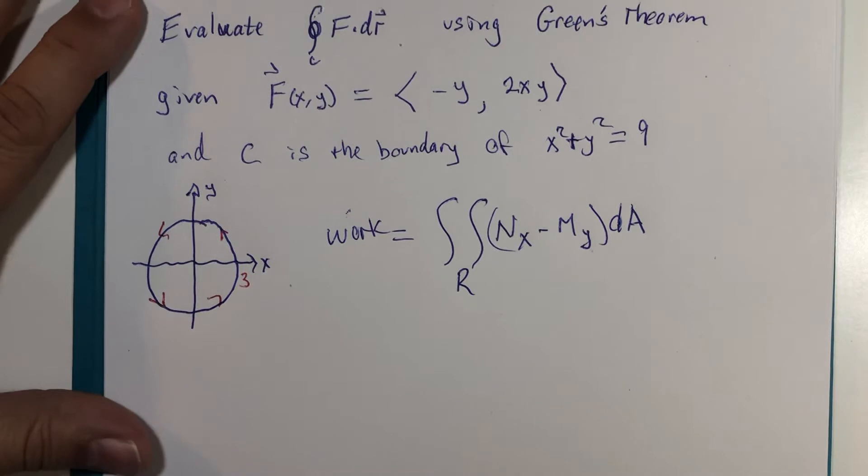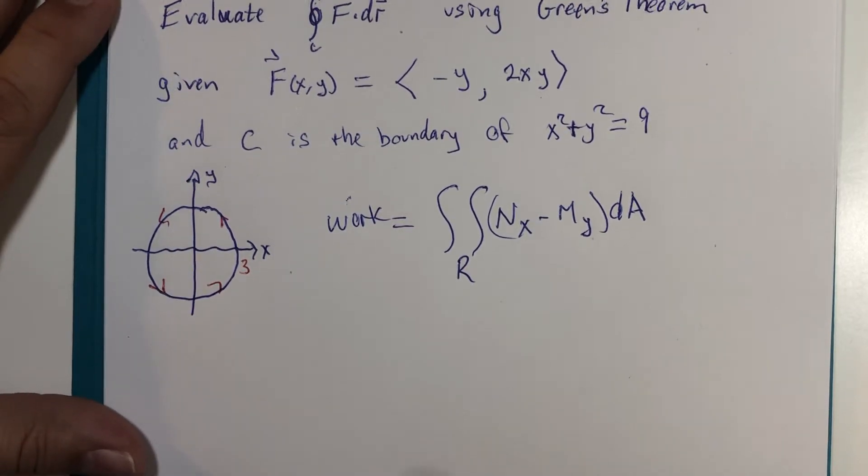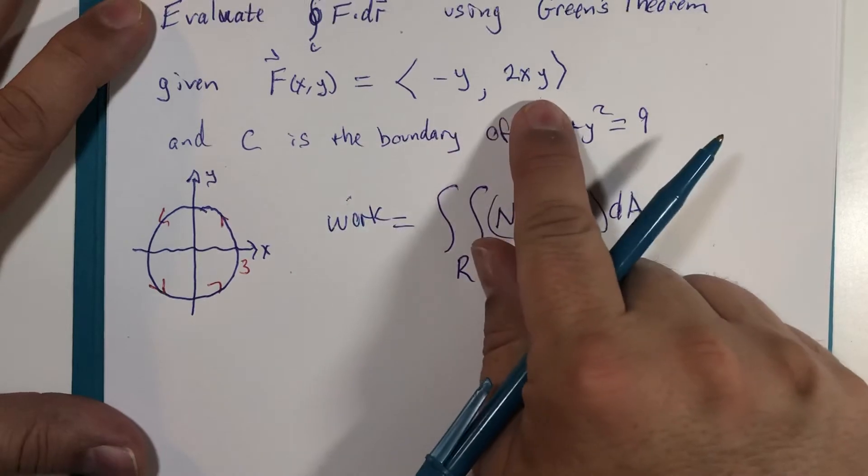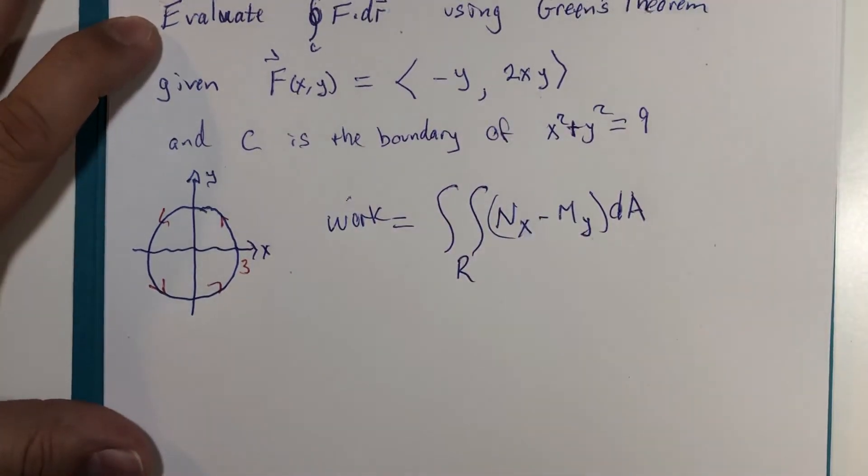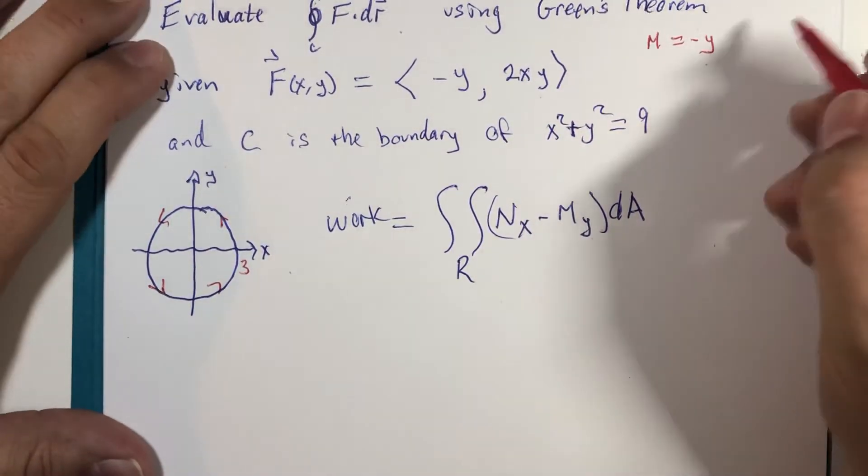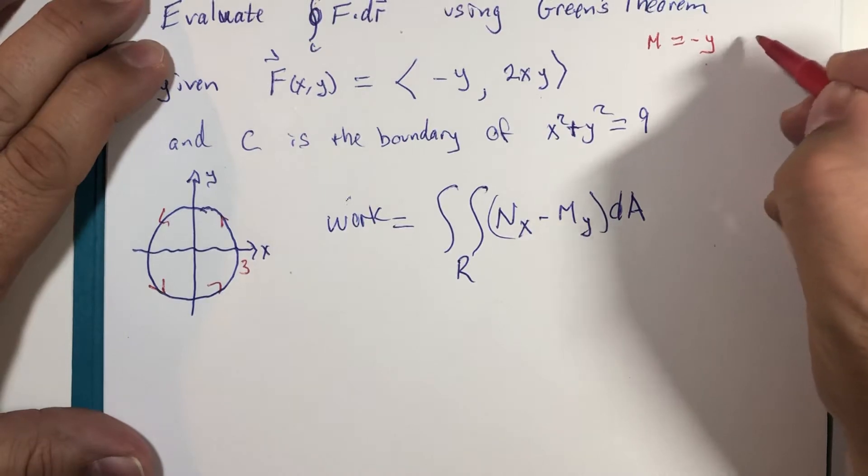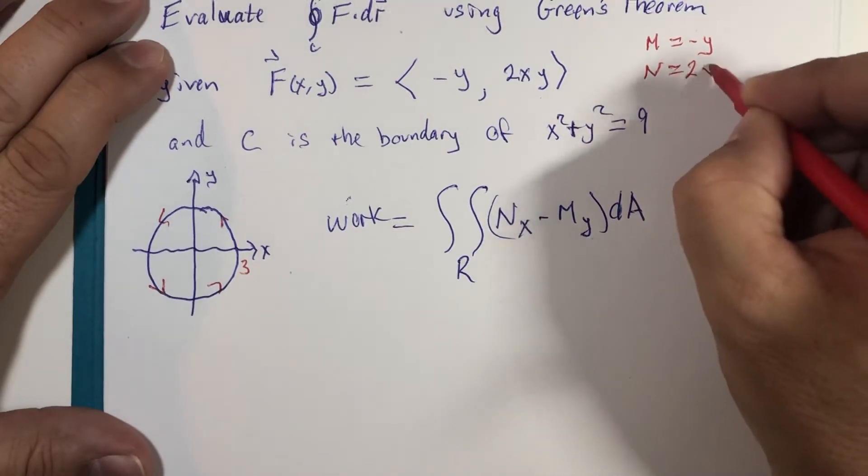So we have to set up our double integral. And given that we have the vector field handy, this would be a fairly easy calculation. M is equal to negative y and its derivative with respect to y is going to be pretty easy. N is 2xy.